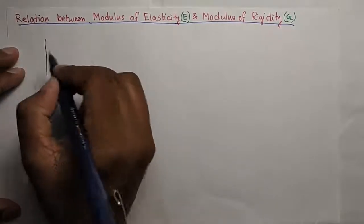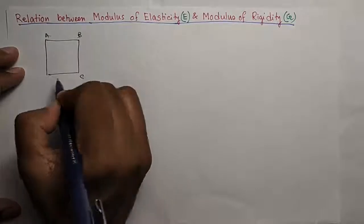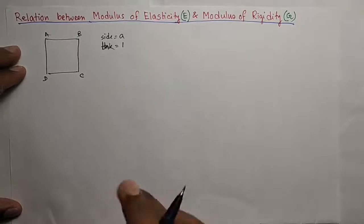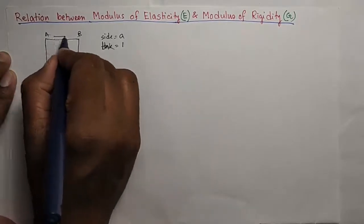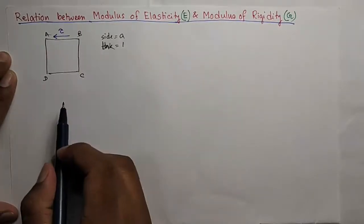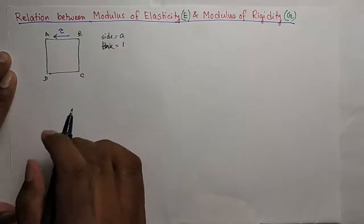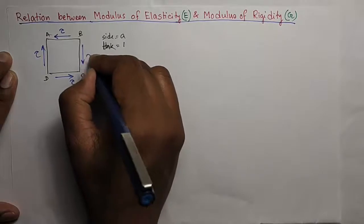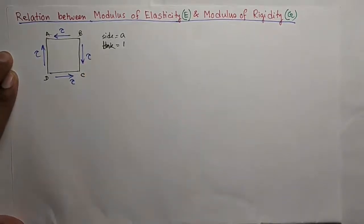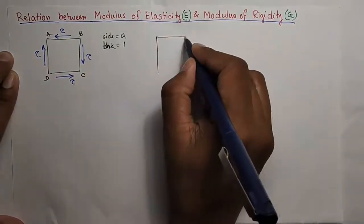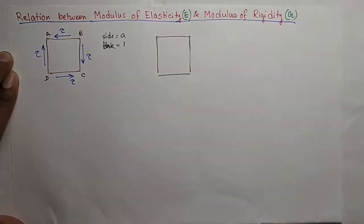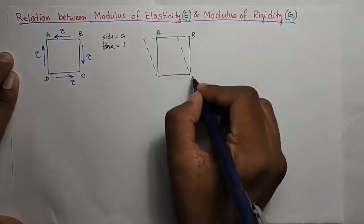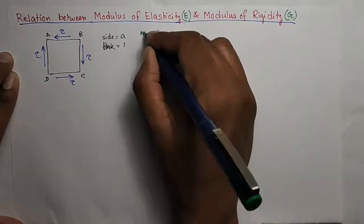Let us consider a square block ABCD whose sides are of length A and thickness is unity. This square block is subjected to shear stress tau here. As shear stress on a single face cannot exist, there will be equal shear stress on the other face also like this. And as a result of this shear force, the square block will deform to a diamond-like shape. A, B, C, D will be A' D.